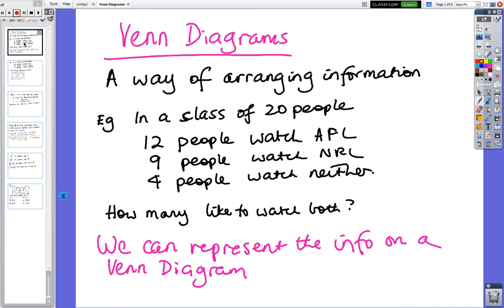We're looking at a way of arranging information and this technique is called Venn Diagrams. It's just a way of looking at how many people like to watch one thing or the other or both. I've got a survey with 20 people: 12 people like AFL, 9 watch NRL, and 4 people watch neither. The question is how many people like to watch both, and this information can be represented on the Venn Diagram.